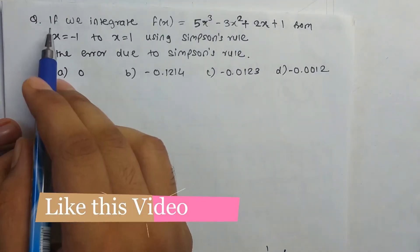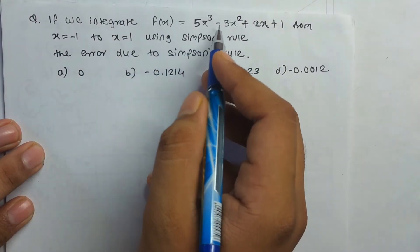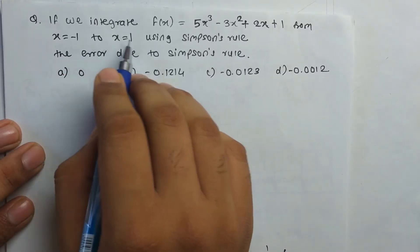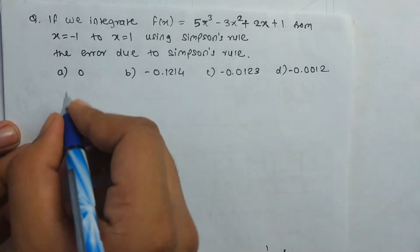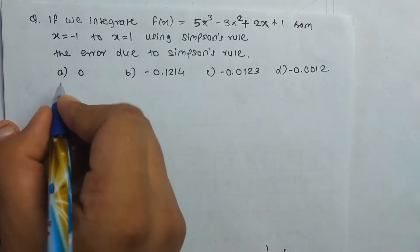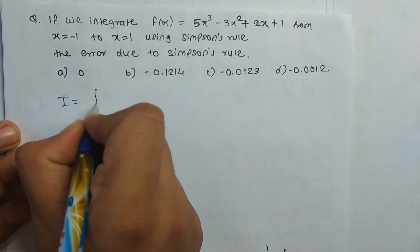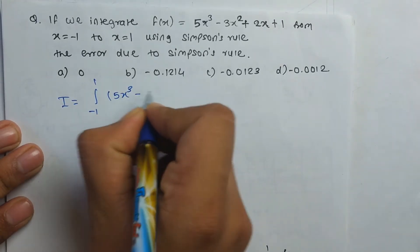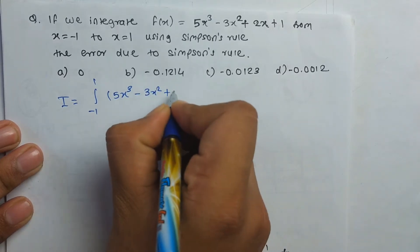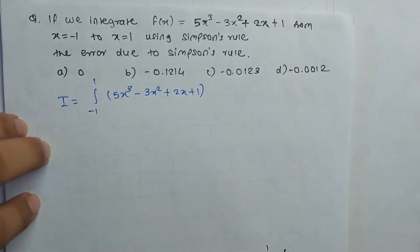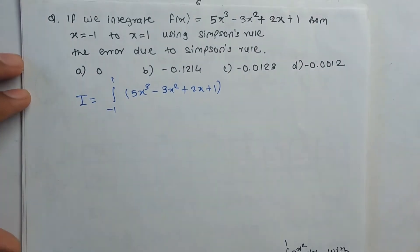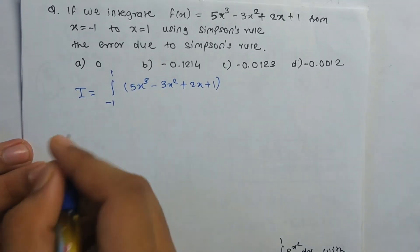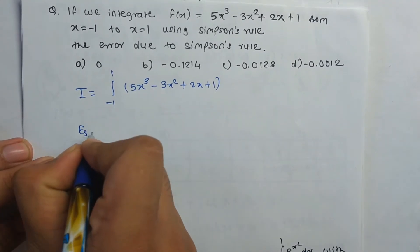Problem 1: Integrate f(x) = 5x³ − 3x² + 2x + 1 from x = −1 to x = 1 using Simpson's rule. We place the integration: I = ∫₋₁¹ (5x³ − 3x² + 2x + 1) dx. We have to find the error due to Simpson's rule.